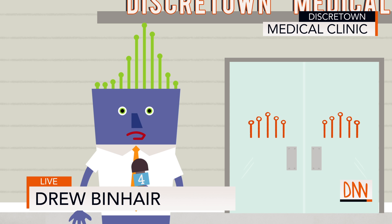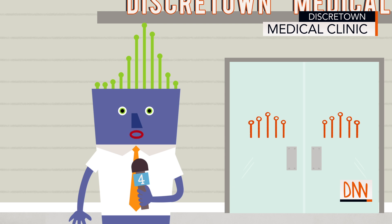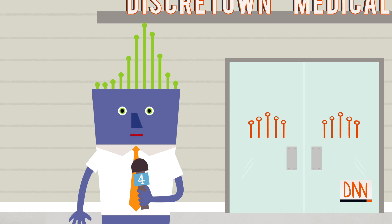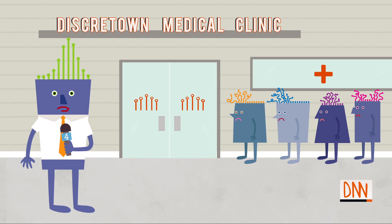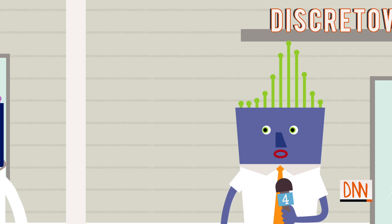This is Drew Benhair reporting live from the Discreet Town Medical Clinic. The town is grappling with an outbreak of hypertangulosis, a condition which makes hair tangled and gnarled. As you can see, the line is out the door. Let's go to Dr. Sarah Straighthair for the latest.